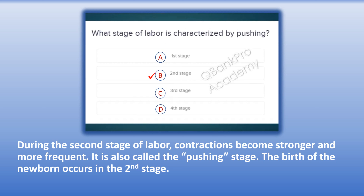The correct answer is B. Second stage. Explanation: During the second stage of labor, contractions become stronger and more frequent. It is also called the pushing stage. The birth of the newborn occurs in the second stage.